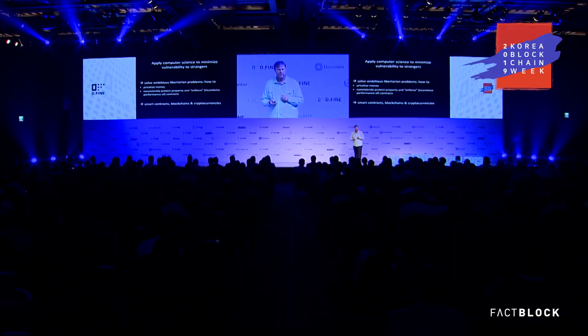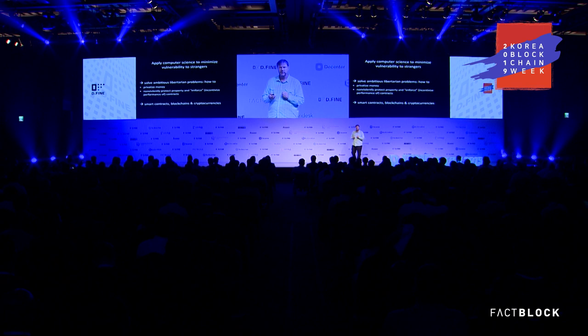When a bunch of us in the 90s had a mailing list called Lib Tech, we discussed and came up with many of these ideas. We had some ambitious libertarian problems: how to privatize money and how to non-violently protect property. 'Enforce' is a standard term, but in smart contract terms, that means incentivize the performance of contracts.